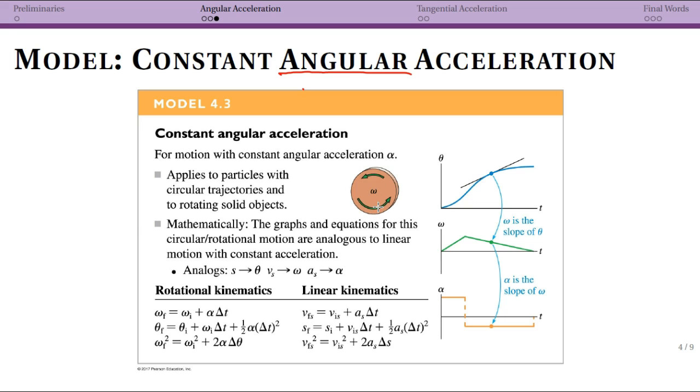However, now we're saying it can have an angular acceleration. Before, when we talked about uniform circular motion, it did not have angular acceleration. Now we do. We can make plots of theta, our angular position; omega, our angular velocity; and alpha, our angular acceleration.